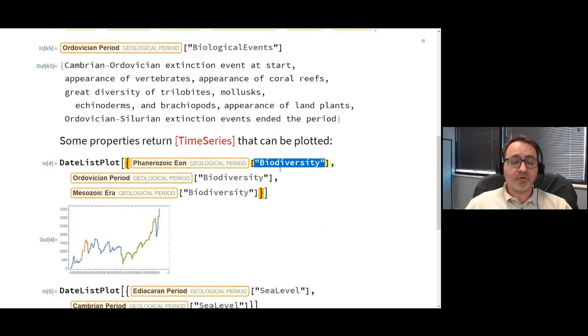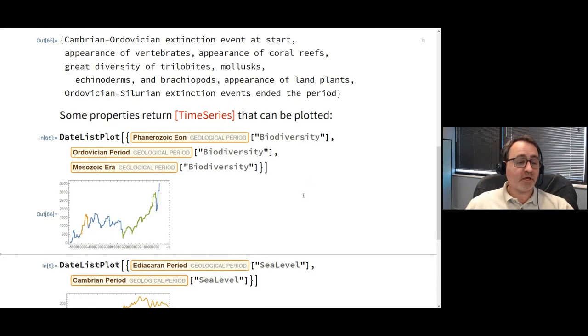We have biodiversity as a property. For the Phanerozoic eon, the Ordovician period, and the Mesozoic era, I've got three different time series plotted together on one date list plot. You can see the blue in the background gives you the entire Phanerozoic eon. The Ordovician period is in orange and the Mesozoic era in green. You can see where the mass extinctions were. Here's the Cretaceous paleogene extinction when the dinosaurs died, and the Great Dying, the Permian extinction.